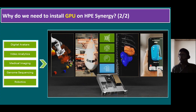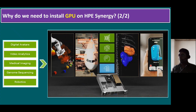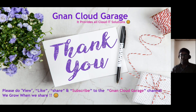So the main key point is: for our existing Synergy frame, we need a graphics expansion module. Unlike a rack mount server where you directly insert the GPU into a PCIe slot, in this Synergy frame the only additional thing needed is this graphics expansion module. Thank you. If you are watching this video for the first time, please like, share, and subscribe to the Ignant Cloud Garage channel. If you're already subscribed, I appreciate all your support. Bye for now.